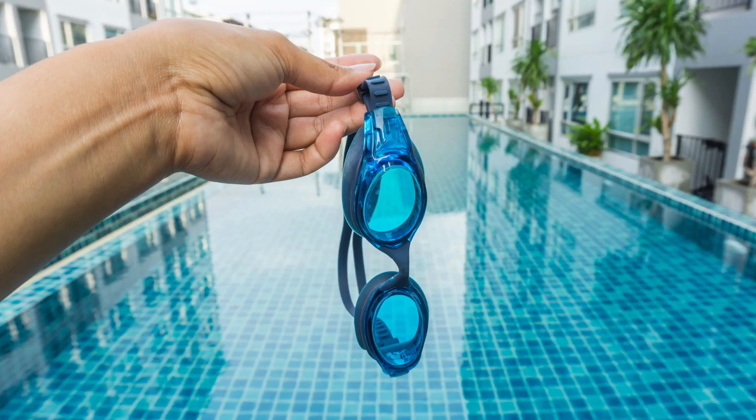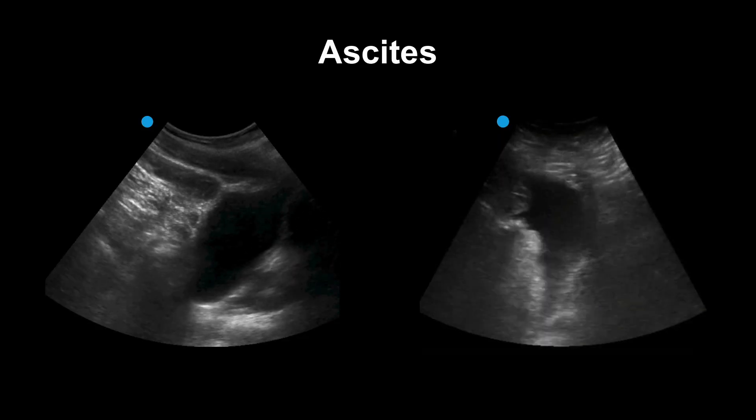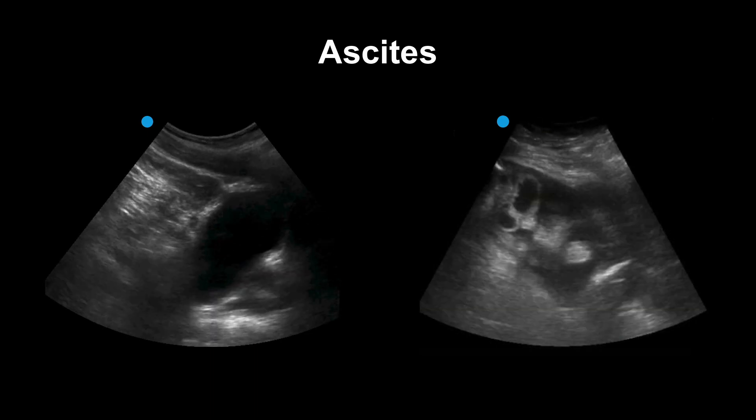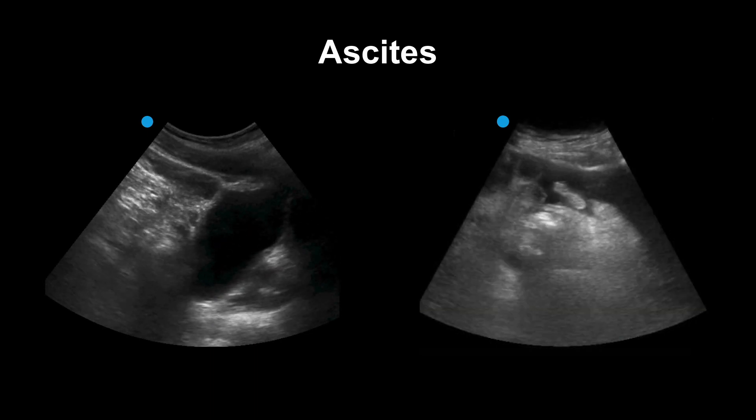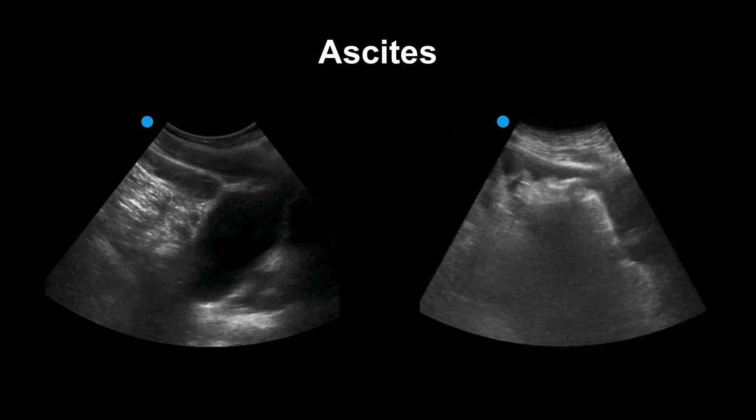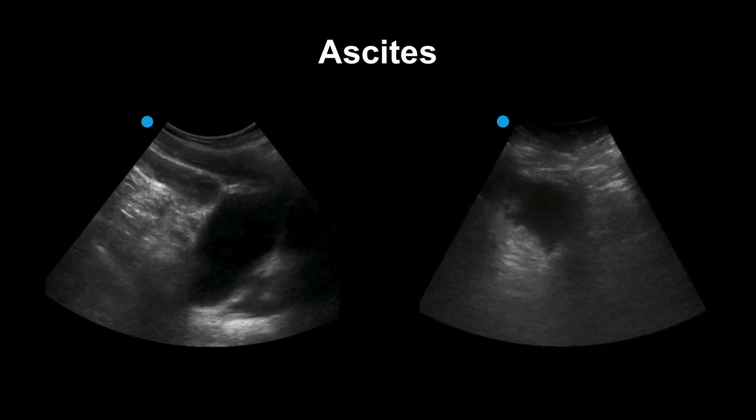Throughout this lesson, we will be looking for water, but maybe not in a way that you've done before. As you know, fluid on ultrasound appears anechoic or black. Ascites is no different.